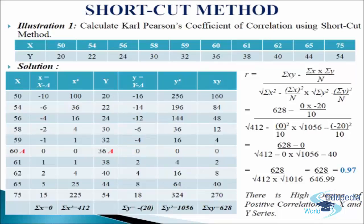Now we come to the next column, that is y equals to y minus a, where y is the variable and a is the assumed mean. So 20 minus 36 comes minus 16, 22 minus 36 comes minus 14, 24 minus 36 comes minus 12, 30 minus 36 comes minus 6, 32 minus 36 comes minus 4, 36 minus 36 comes 0, 38 minus 36 comes 2, 40 minus 36 comes 4, 44 minus 36 comes 8, and 54 minus 36 comes 18. We will add up the values and get sigma y equals to minus 20.